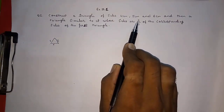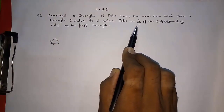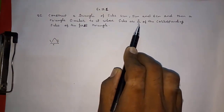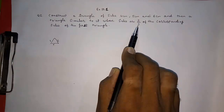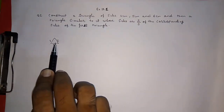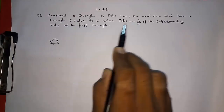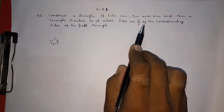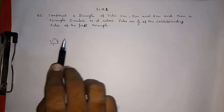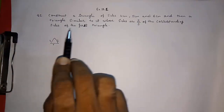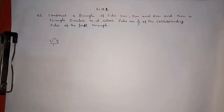If the numerator is smaller and denominator is greater, that is a proper fraction, and you will get the similar triangle inside the given triangle. If the numerator is greater and denominator is smaller — an improper fraction — you will get the triangle exterior to the given triangle. Here the numerator is smaller, so we get the triangle inside.